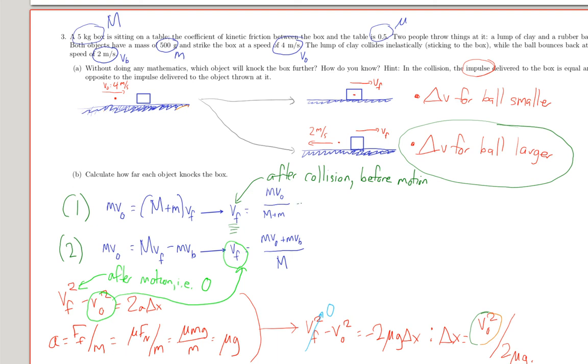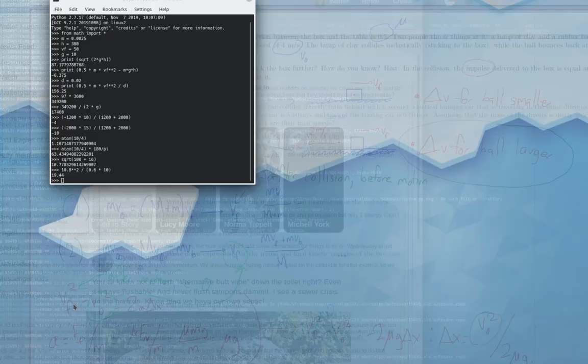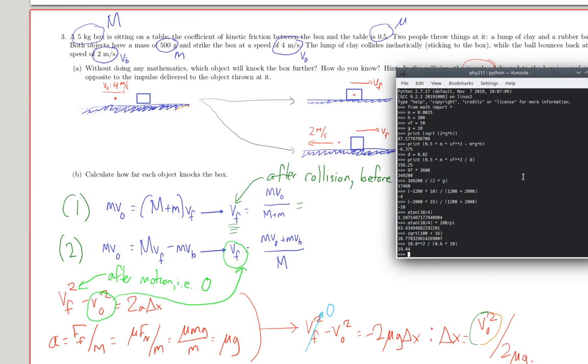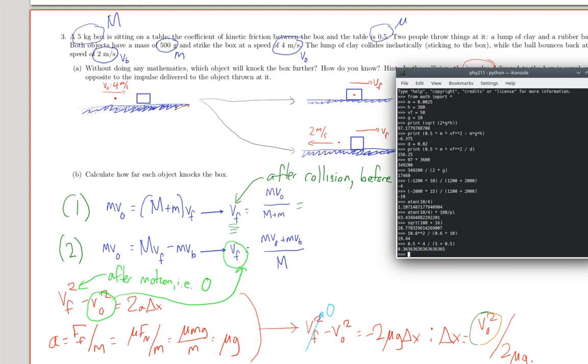So, just to make things easier to write, let's put in the numbers here. So, I'll go to my handy little python interpreter. I have 500 grams, so 0.5 kilogram, times the initial velocity of 4 meters per second, divided by their combined mass, which was 5 plus a half. That gives me 0.36 meters per second on top.